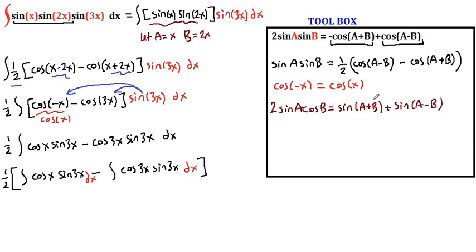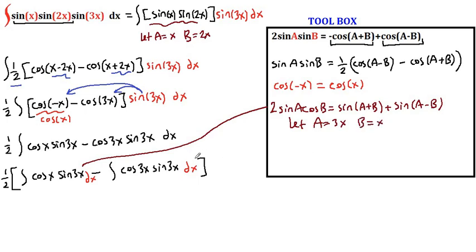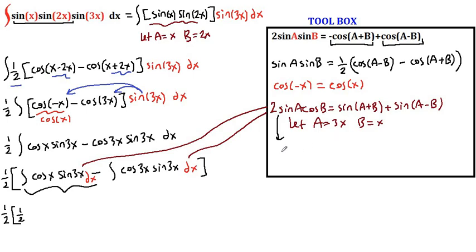We can work on deriving this on another video. For the integral on the left, we apply this identity letting a be 3x and b be x. On the right integral we apply the same identity, or we could also apply substitution since we have the same angle. For now, let's use this identity for both. Dividing both sides by 2, we get one half times sine of a plus b plus sine of a minus b.